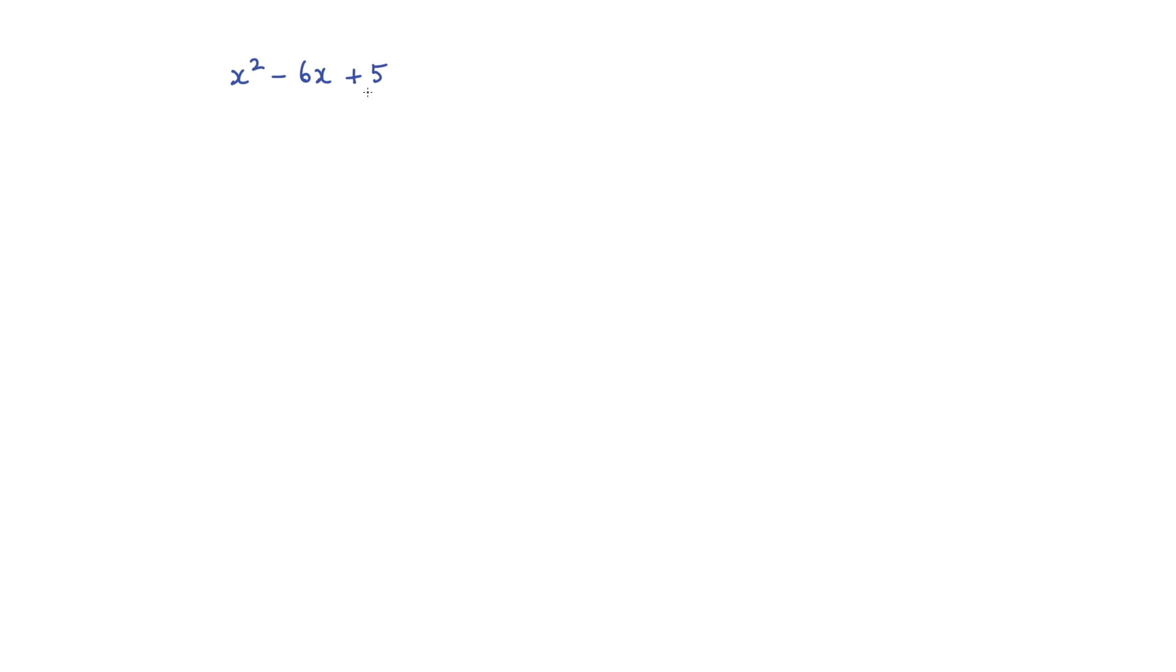So two numbers multiplied together gives me 5 and when I add them gives me negative 6. Let's think about that product first. I could have 1 multiplied by 5 that will give me 5. It could also be negative 1 by negative 5 that will also give me an answer of plus 5.